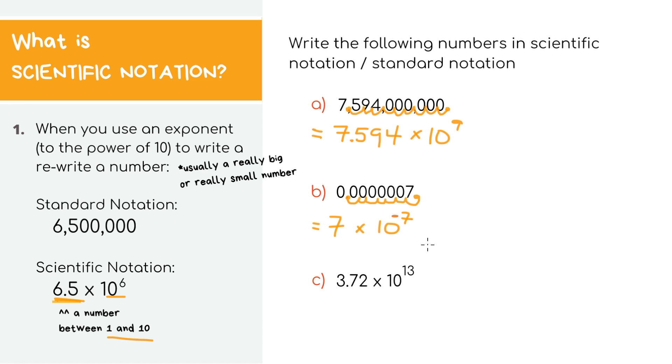We have our final example, which is already in scientific notation, so let's write it out into standard notation. Basically what we'll do is copy down the 3.72 and put our pencil where the decimal is right now. You'll notice that the exponent is positive 13, so because it's positive, you know we have to move it to the right by 13 spaces.